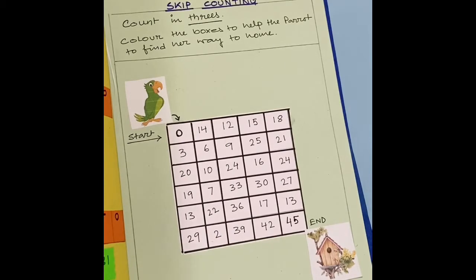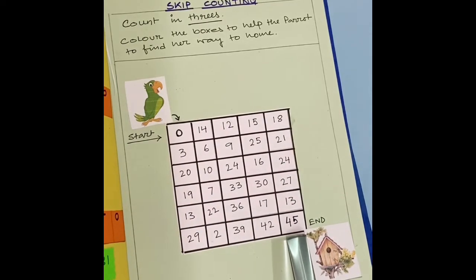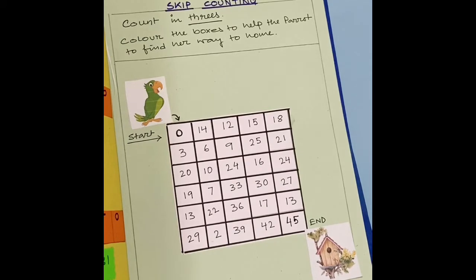From 0 you have to count 3. That is 1, 2, 3. Now here you have to colour the box number 3. Now from 3 we have to count again 3. That is 4, 5, 6. Now you have to colour this box. That is 6. Like this way, you have to come to the end. That is this box. That is 45. You have to choose any one colour and then you have to colour the boxes.